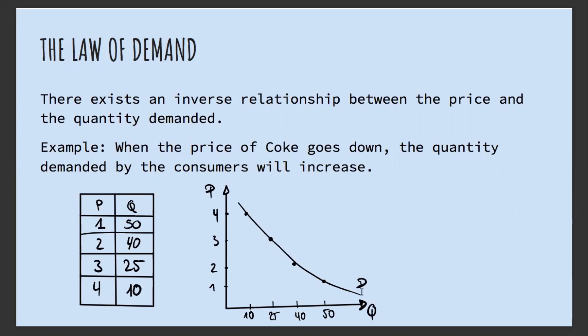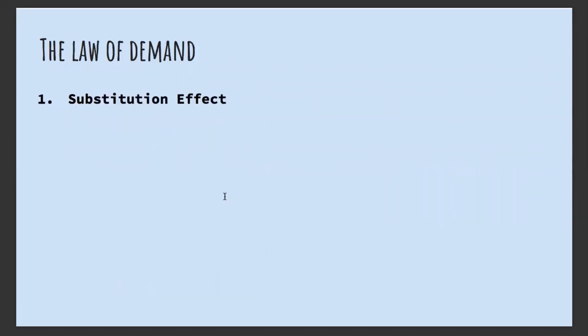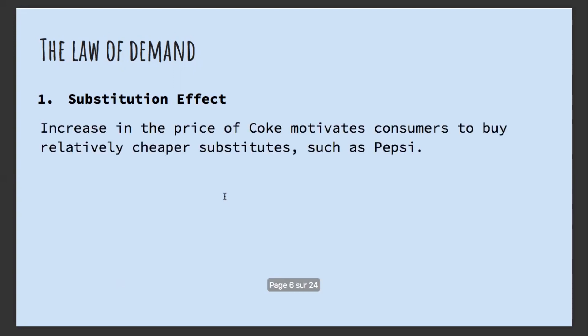You can see that on the graph as well. The law of demand is also driven by, or influenced by, three main characteristics. The first one is the substitution effect — basically, an increase in the price of Coke will motivate consumers to buy relatively cheaper substitutes, such as Pepsi.